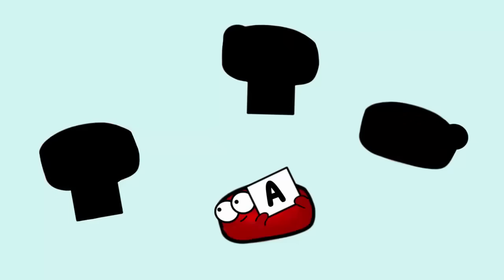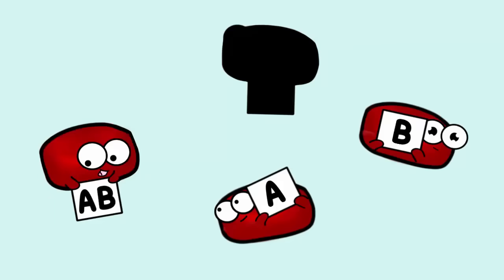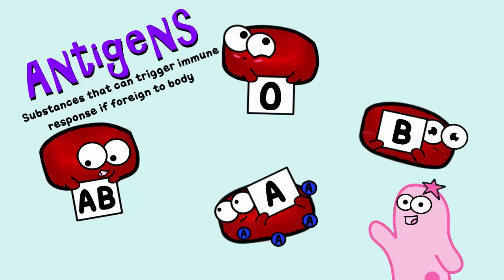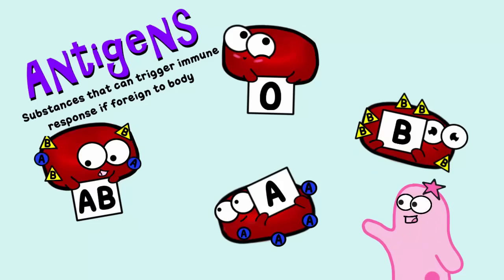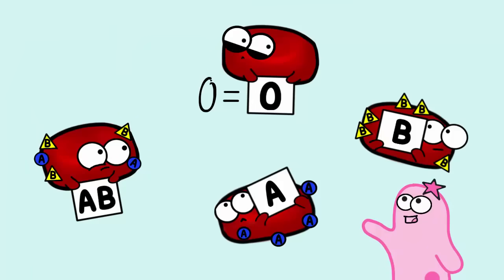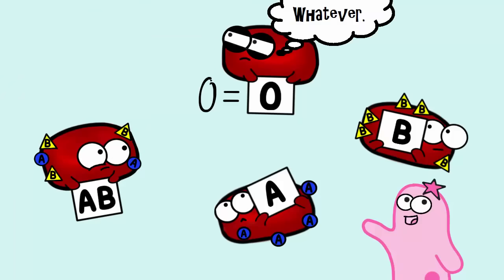With blood type, you can have several different phenotypes: A, B, AB, or O. These letters stand for antigens found on the red blood cells. Type A blood has A antigens on the surface of red blood cells. Type B blood has B antigens on the surface. Type AB has both A and B antigens. Type O - think of it like a zero - it doesn't have A or B antigens. It does have other proteins on its surface, but not A or B.